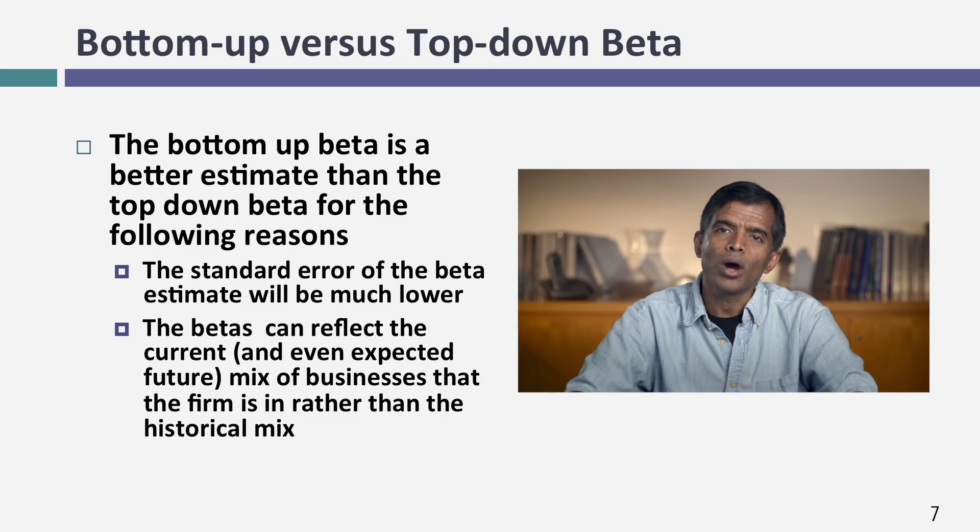Now why am I doing this if I don't like regression betas, yet the betas for the steel companies came from regressions? What's the advantage of using an average of 100 regression betas rather than one regression beta? Remember the law of large numbers in statistics? The average of 100 bad regression betas can actually give you a good beta for a business. So one reason I prefer bottom-up betas is they're more precise.